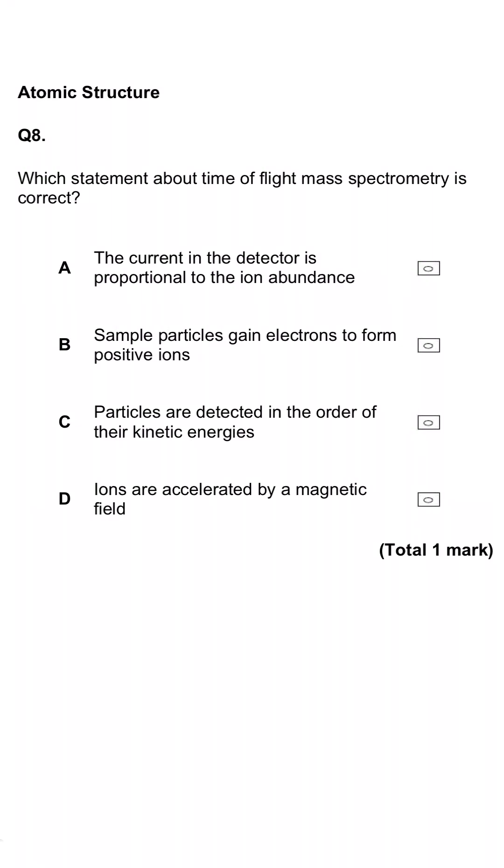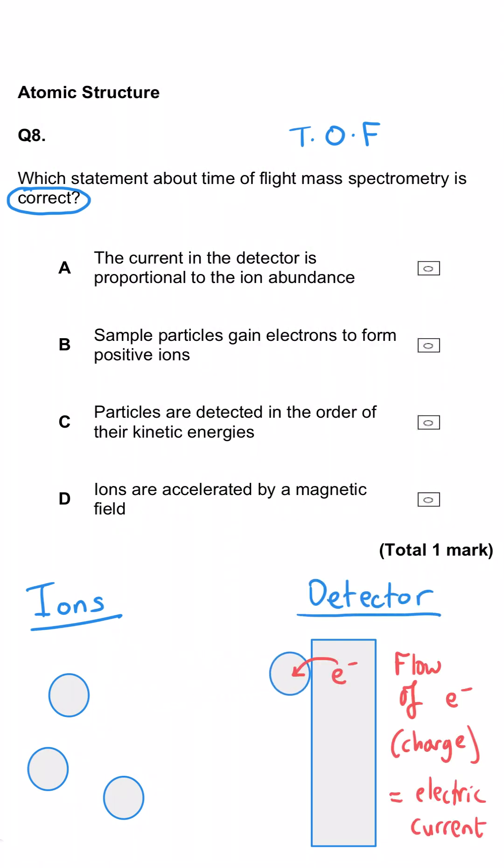This question is asking us about the time-of-flight mass spectrometry, and it's asking us which of the four statements is correct. The first one, the current in the detector is proportional to the ion abundance. Well, that is the correct answer. The greater the rate that the ions hit the detector, the quicker those electrons are transferred to those ions, and therefore, the bigger the current is flowing. So, the abundance is proportional to the current.